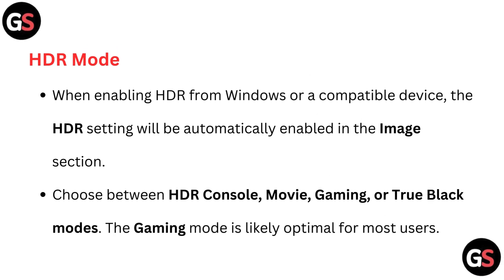HDR Mode: When enabling HDR from Windows or a compatible device, the HDR settings will be automatically enabled in the Image section. Choose between HDR Console, Movie, Gaming, or True Black modes. The Gaming mode is likely optimal for most users.